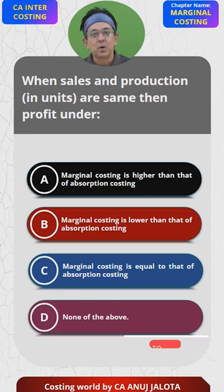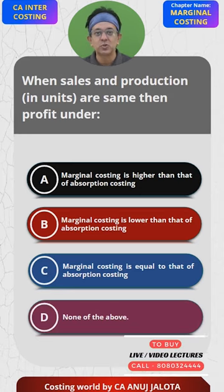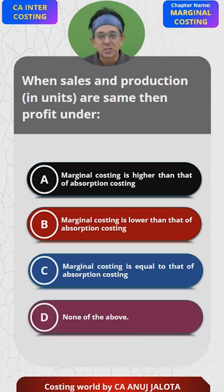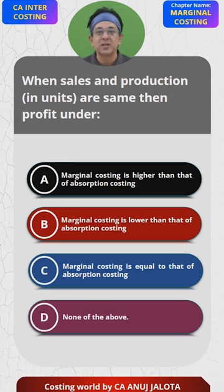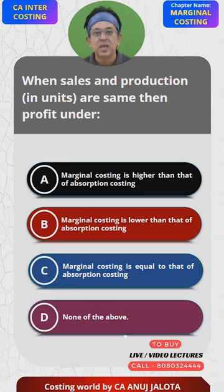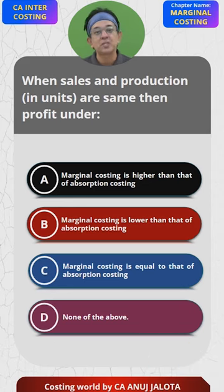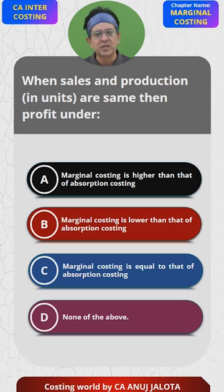We have all done questions like this. Marginal costing says fixed cost is to be written off, so it is written below COGS. Absorption costing says fixed cost is to be charged to the goods, so it is written at its own place.